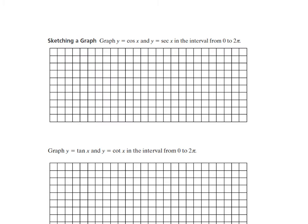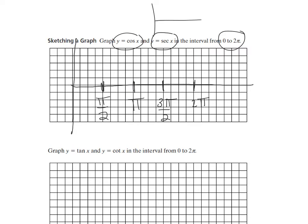Now to graph y equals secant of x. Secant is the reciprocal of cosine, so I'm going to graph this from 0 to 2 pi and make a scale going up by pi over 2, then pi, then 3 pi over 2, then 2 pi. To graph y equals secant of x, I'm first going to graph y equals cosine of x and make a table of values.